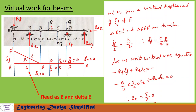Now let us write the virtual work equation: −RF · delta F + RE · delta E = 0. Substituting delta F = (5/2) delta E and simplifying, we get the reaction at E: RE = (5/6) Q.